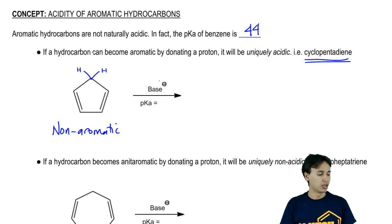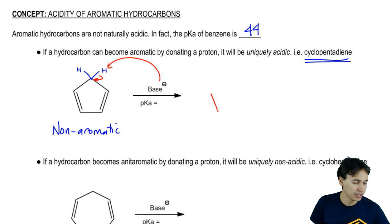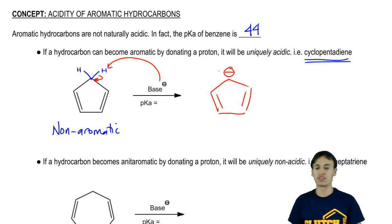But check this out. What if a base were to come along and pull off a proton? What kind of charge would that carbon now get? Well, make a bond, break a bond. I would wind up getting a new compound that looks like this. Double bond, double bond, negative charge. What can you tell me about that molecule? What's the aromaticity of that molecule?